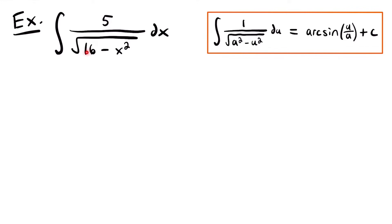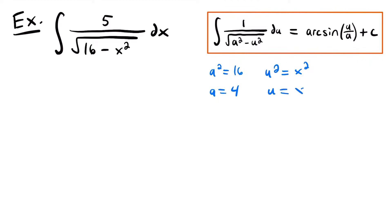In this case, 16 is going to be our constant a squared, and x squared is going to be u squared. If we set those equal to each other — a squared equals 16, and u squared equals x squared — then we can take the square root of both sides. So a is equal to 4, and u is equal to x.